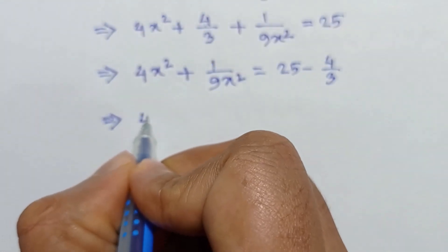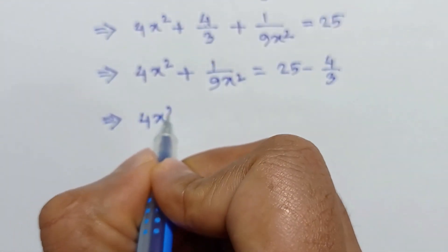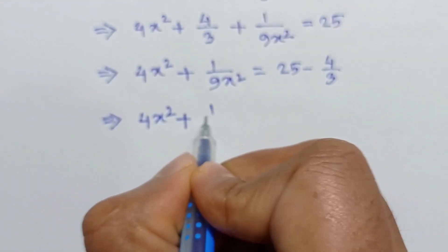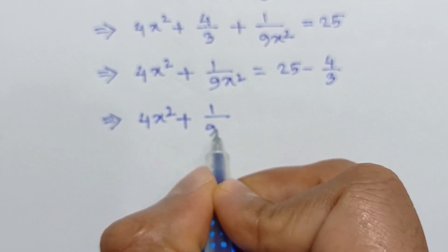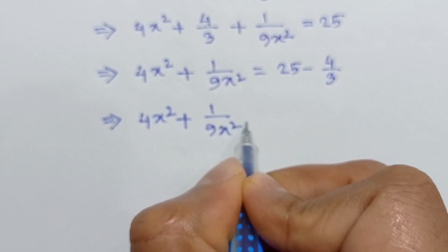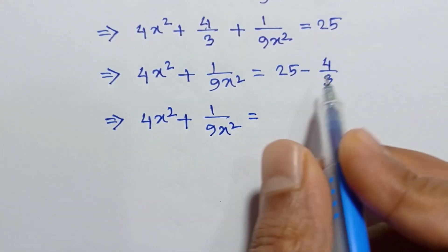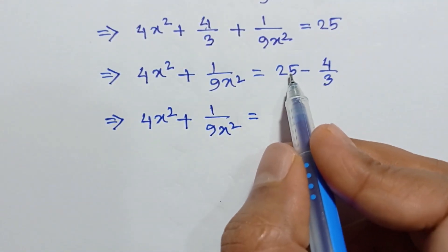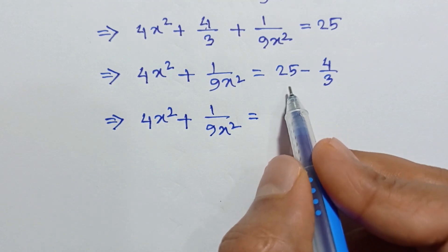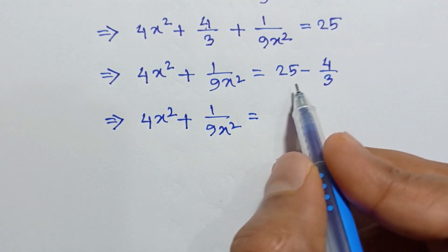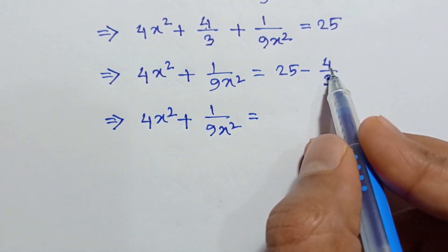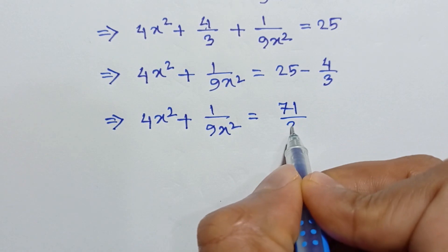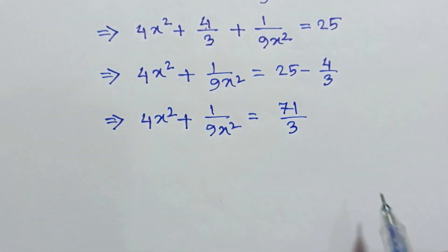So, 4x squared plus 1 over 9x squared is equal to — taking a common denominator of 3 — 3 times 25 is 75, minus 4, which gives 71 over 3.